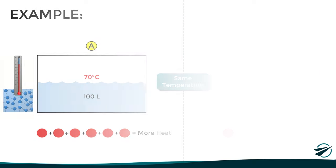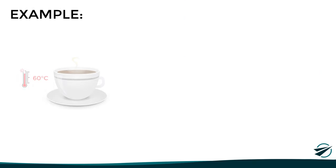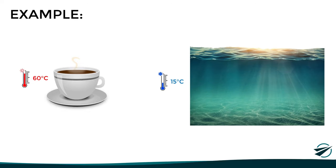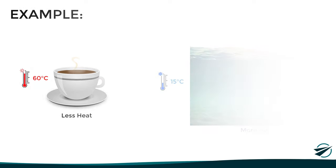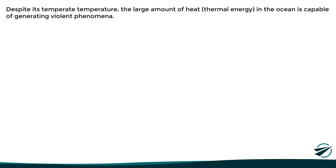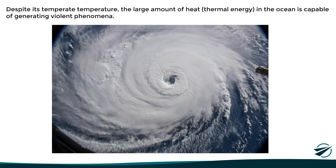In fact, a substance with a lower temperature may have more heat than one with a higher temperature. A clear example is comparing a cup of coffee with the ocean. Although the ocean has a lower temperature than a cup of coffee, since it contains many more molecules, it has much more heat. In fact, the large amount of heat contained in the ocean is capable of generating violent atmospheric phenomena, such as hurricanes.